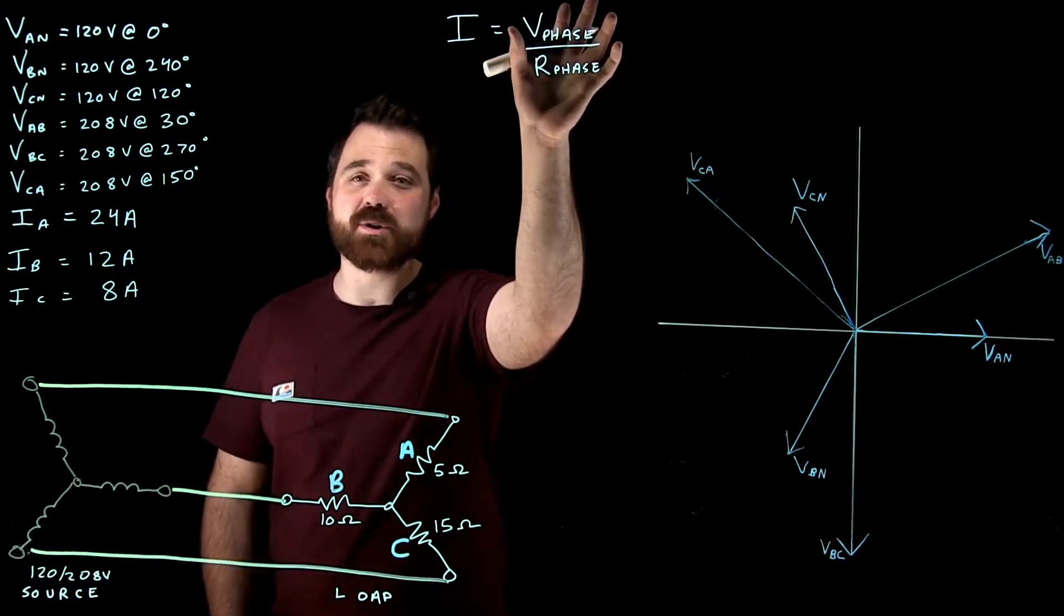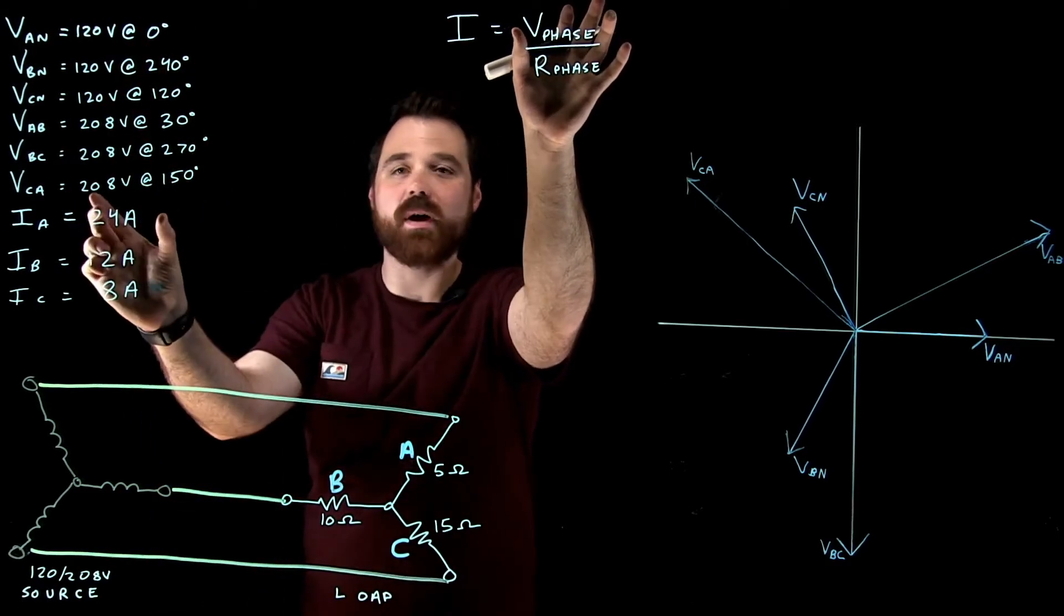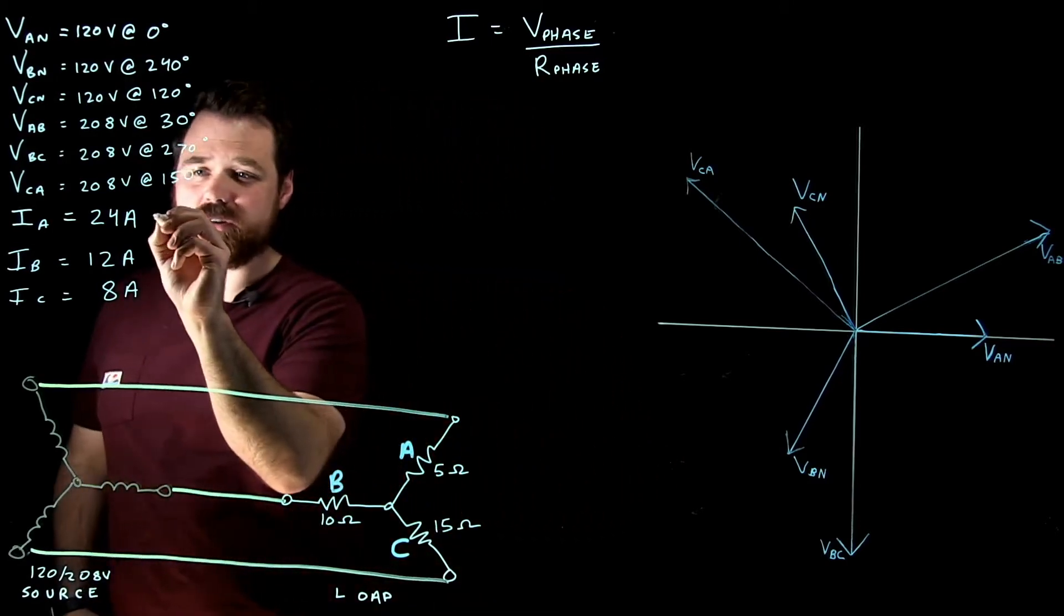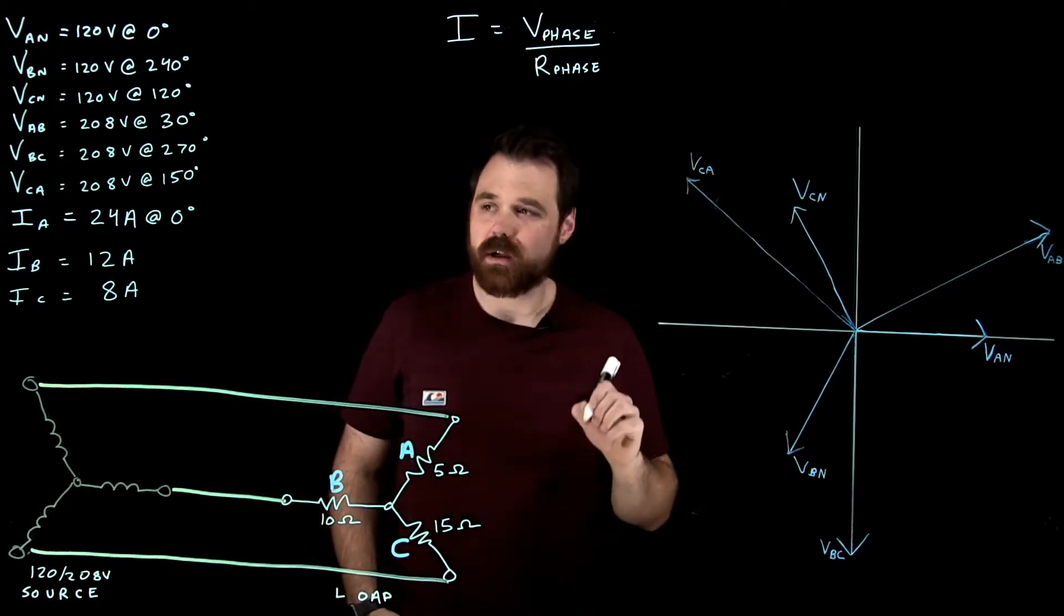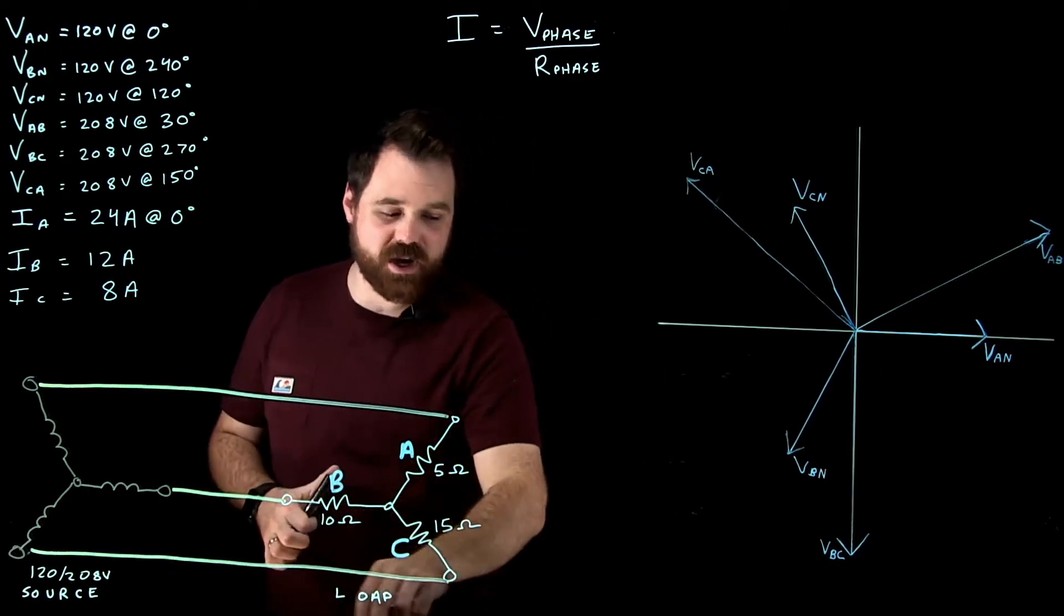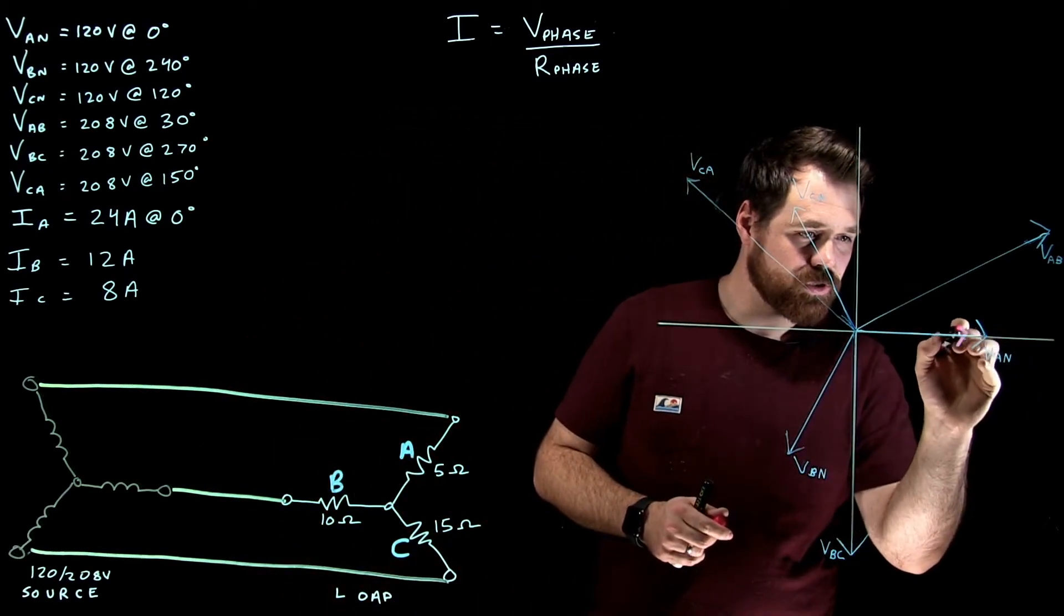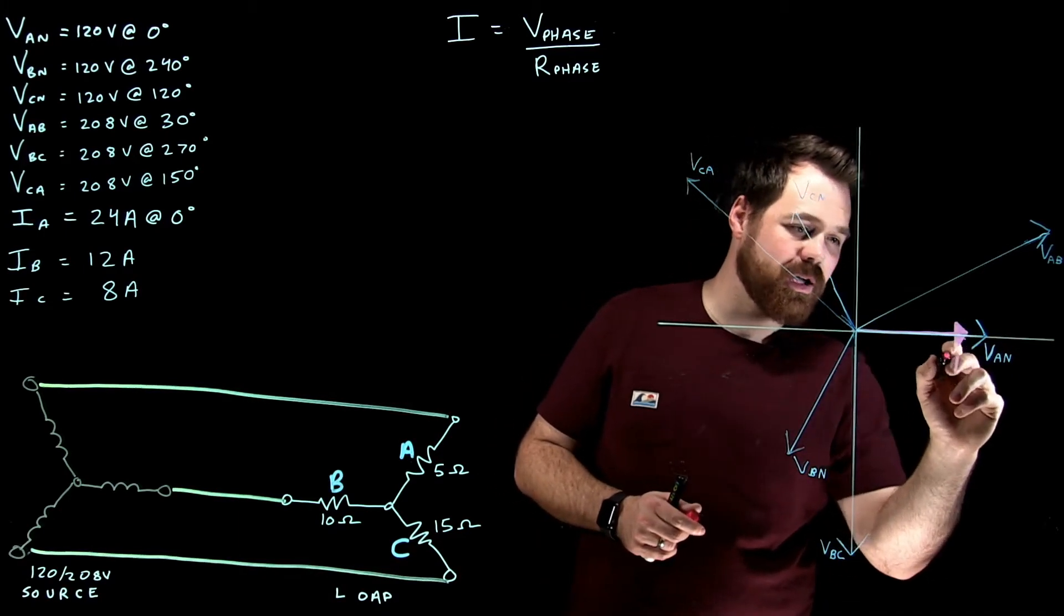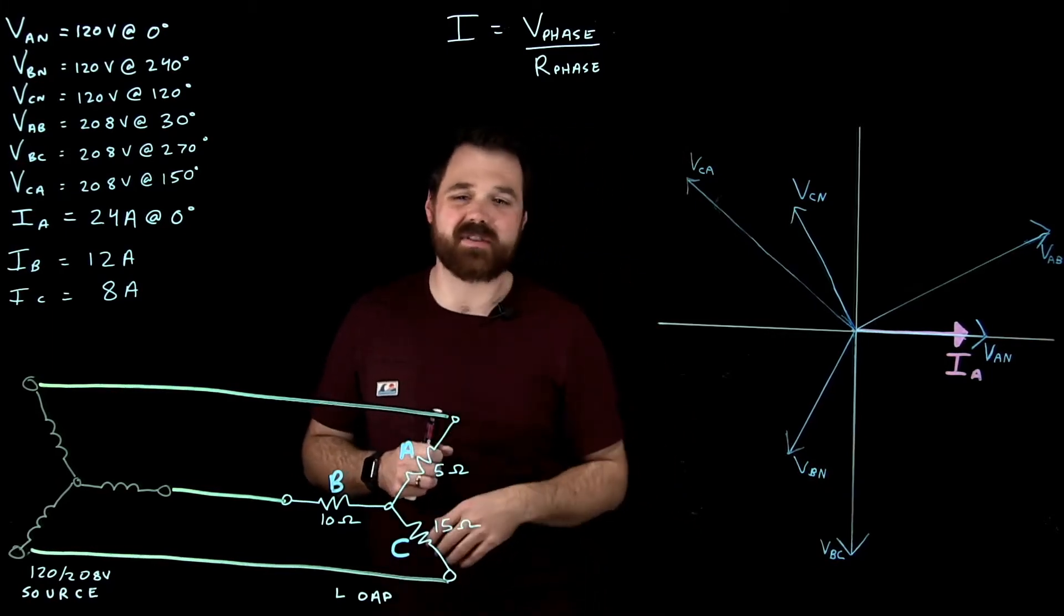So because I used my phase voltage of 120 at zero degrees to get my 24 amps, my current is going to be in phase with that, which means this is also going to be at zero degrees. Okay, and now I'm going to plot that onto my phasor diagram over here. Right there, IA is in phase with the voltage across phase A.